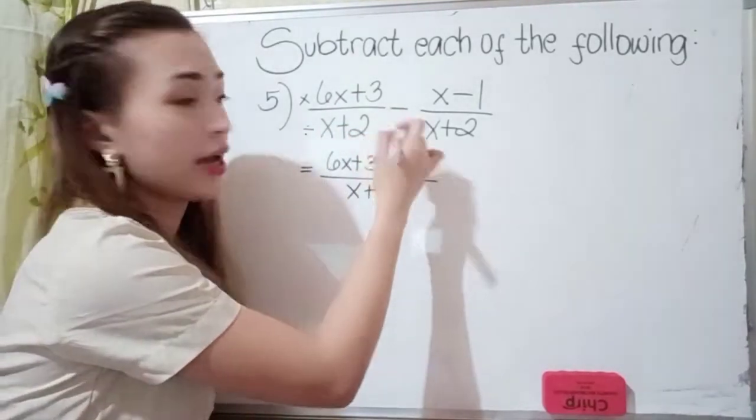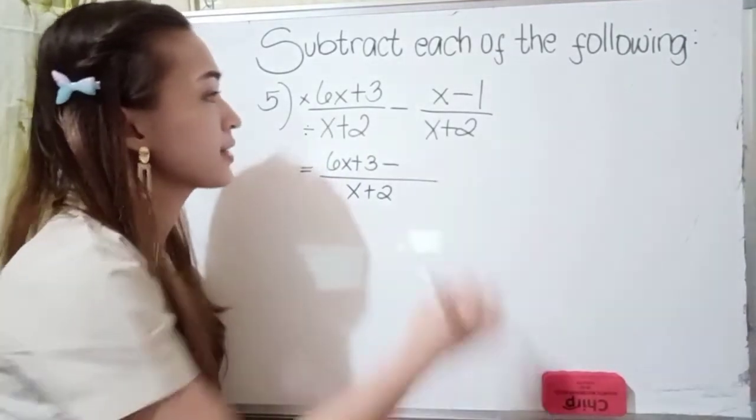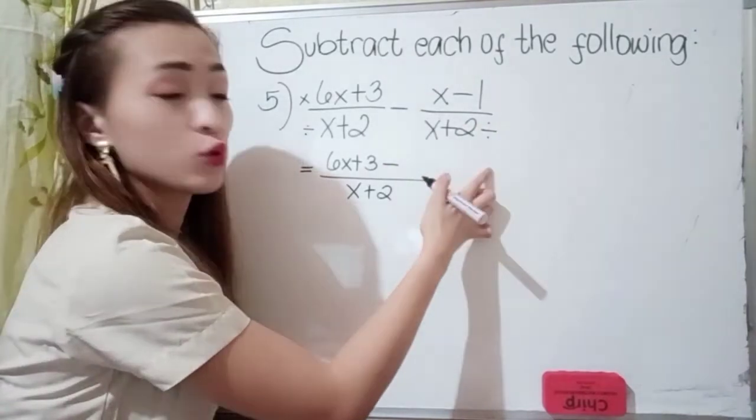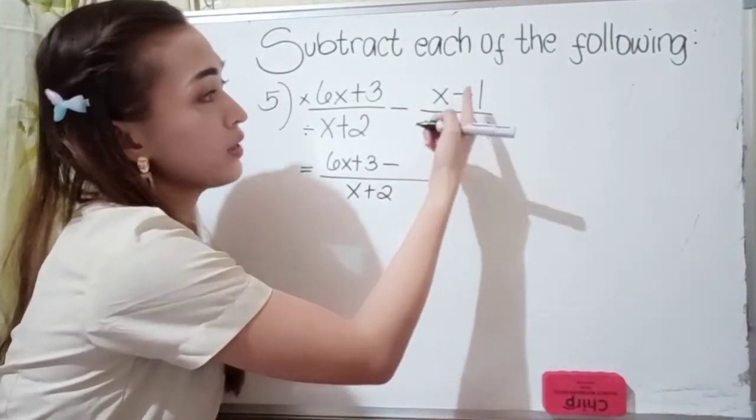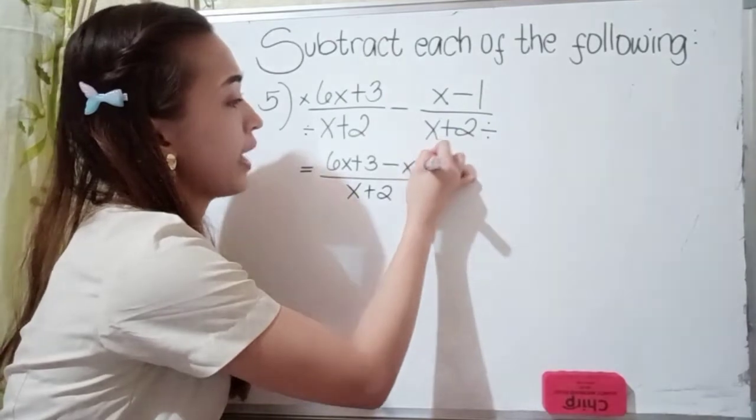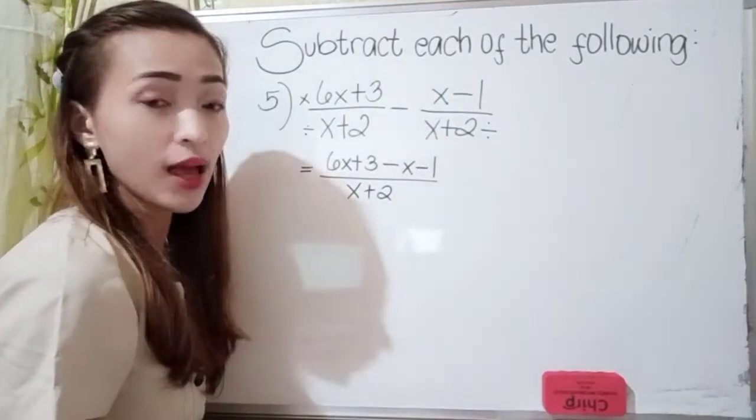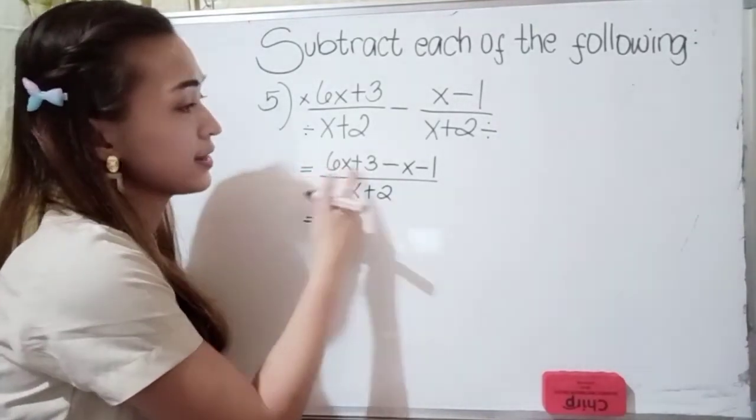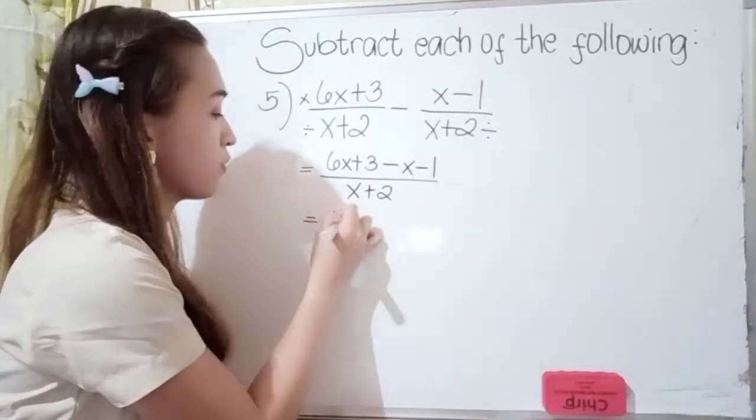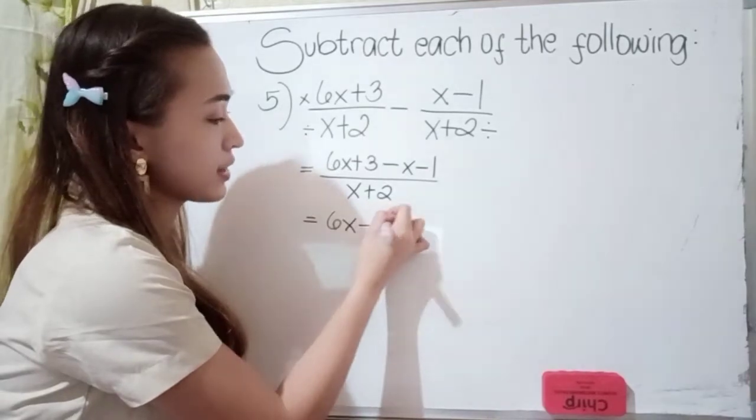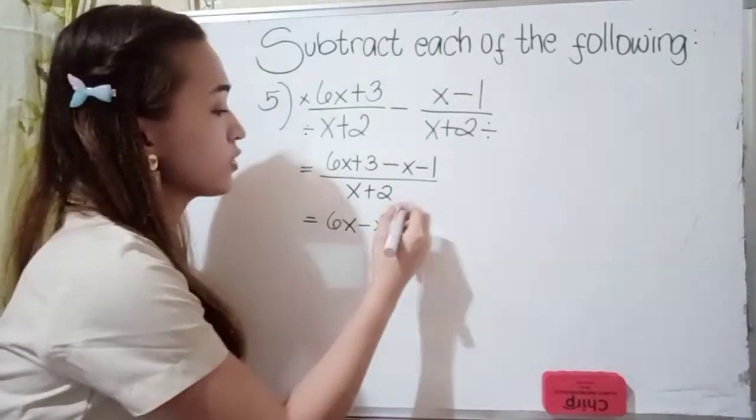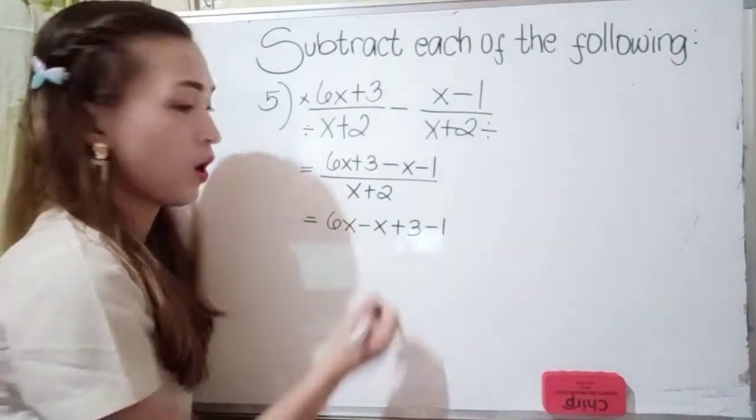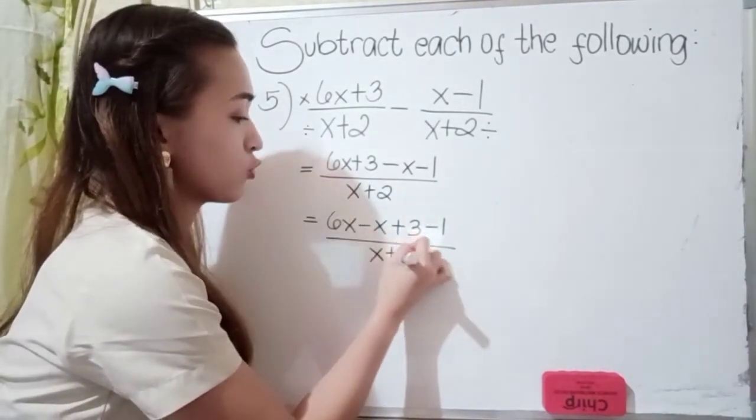So since this is minus, write minus here. Then next, x plus 2 divided by x plus 2 is 1, so 1 times x minus 1 is x minus 1. Next, let's combine similar terms. Since 6x is the same with negative x, we have 6x minus x. And we have 2 constants, so we have plus 3 and then negative 1 over x plus 2.